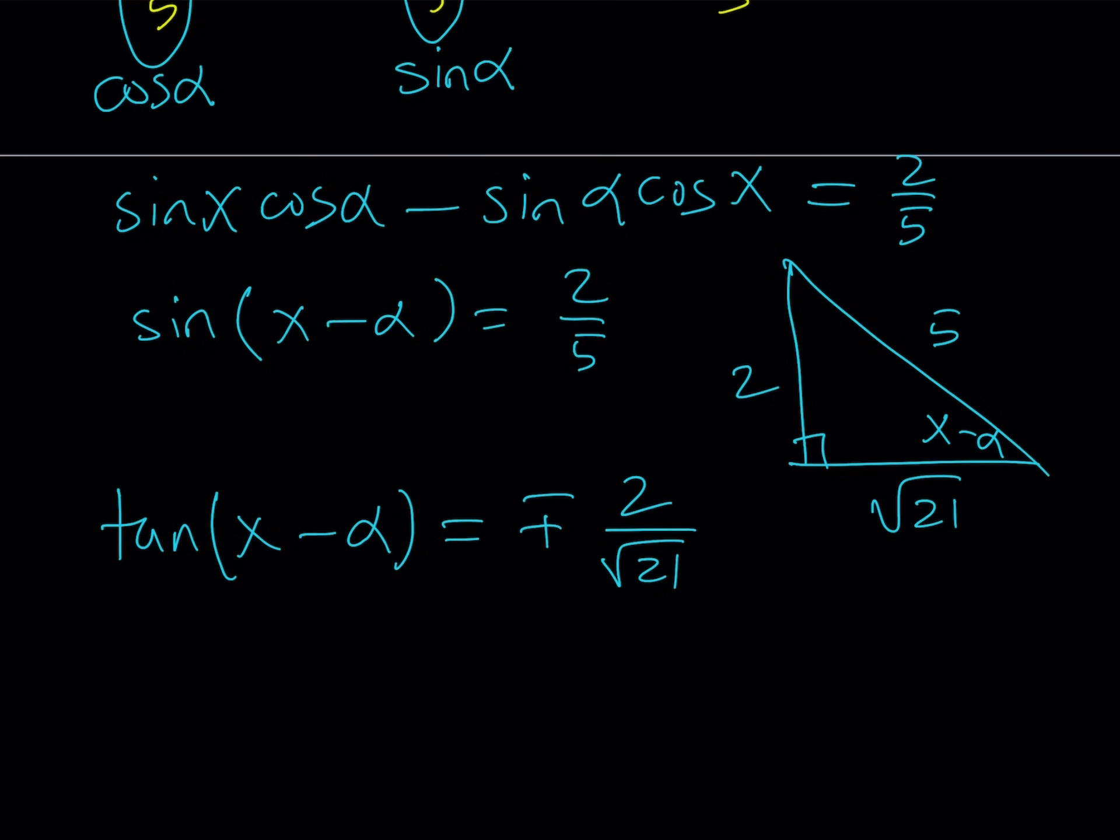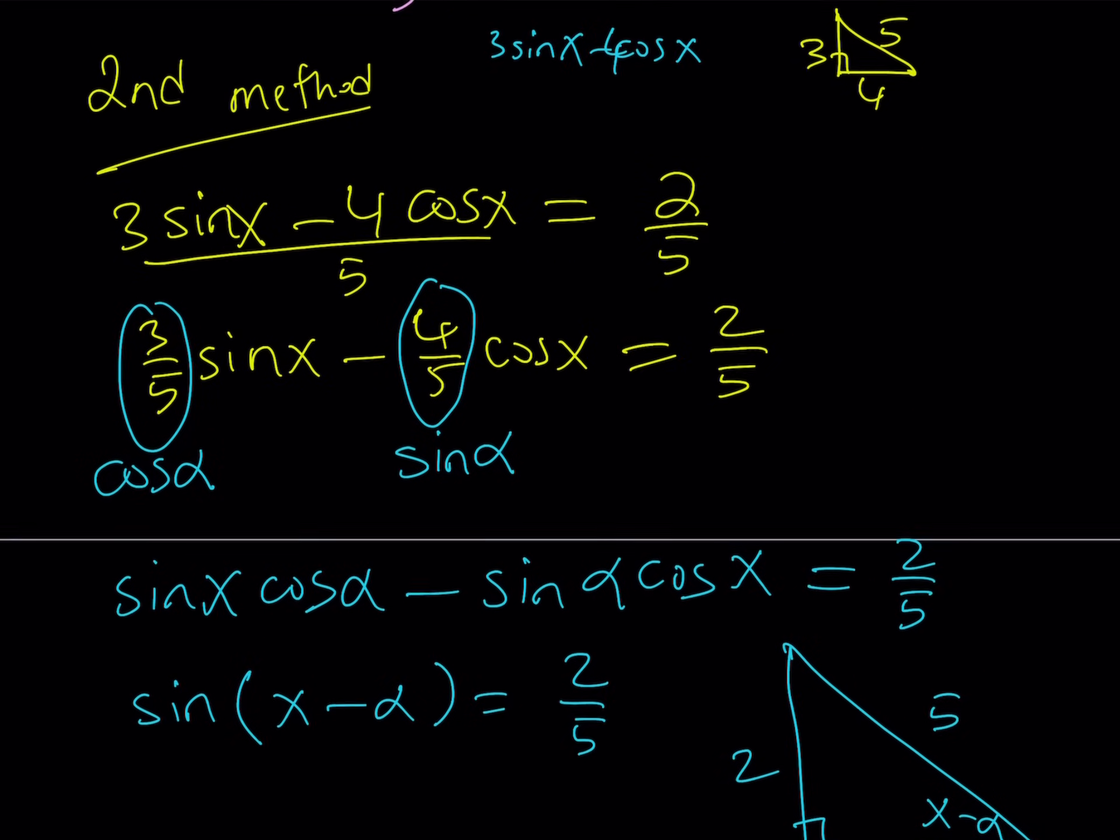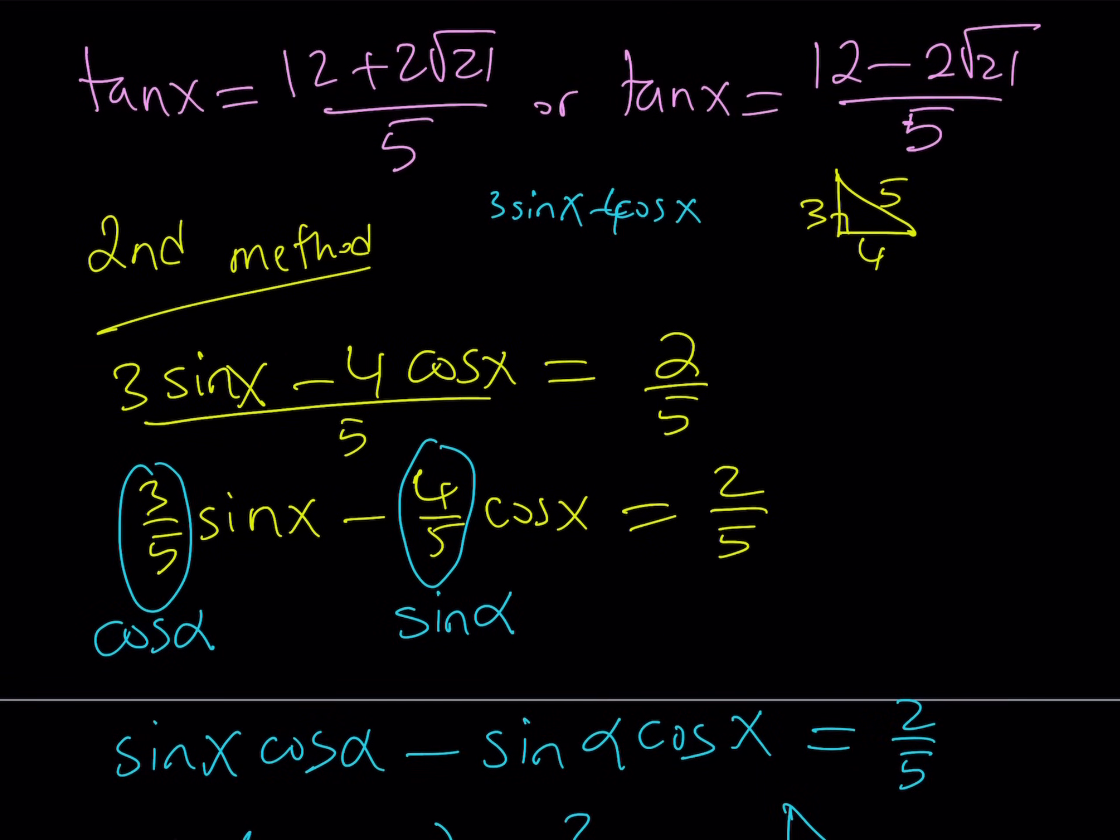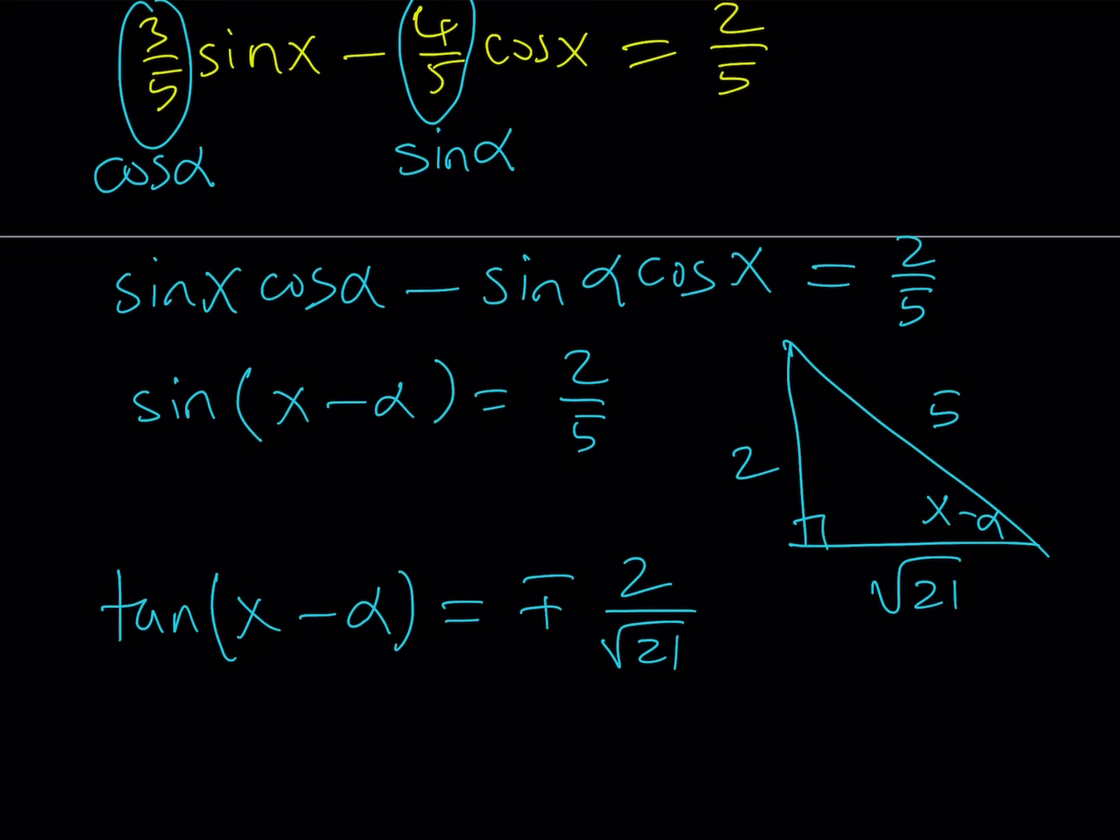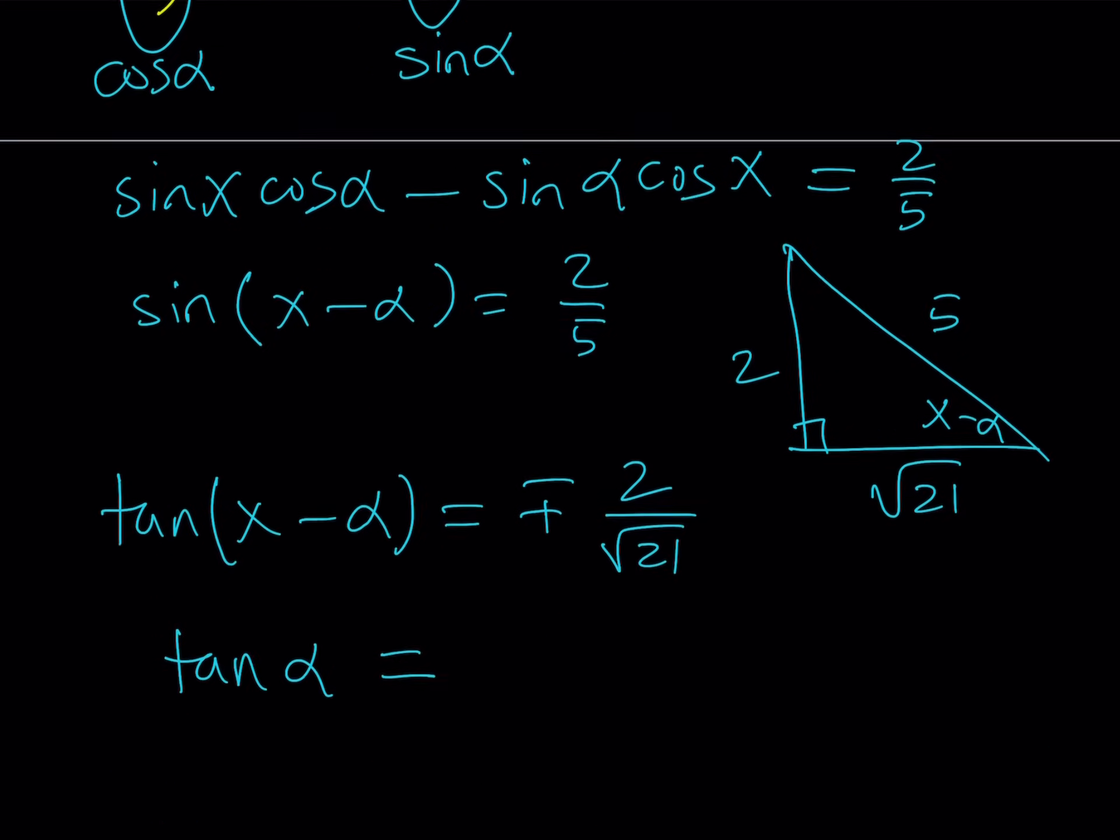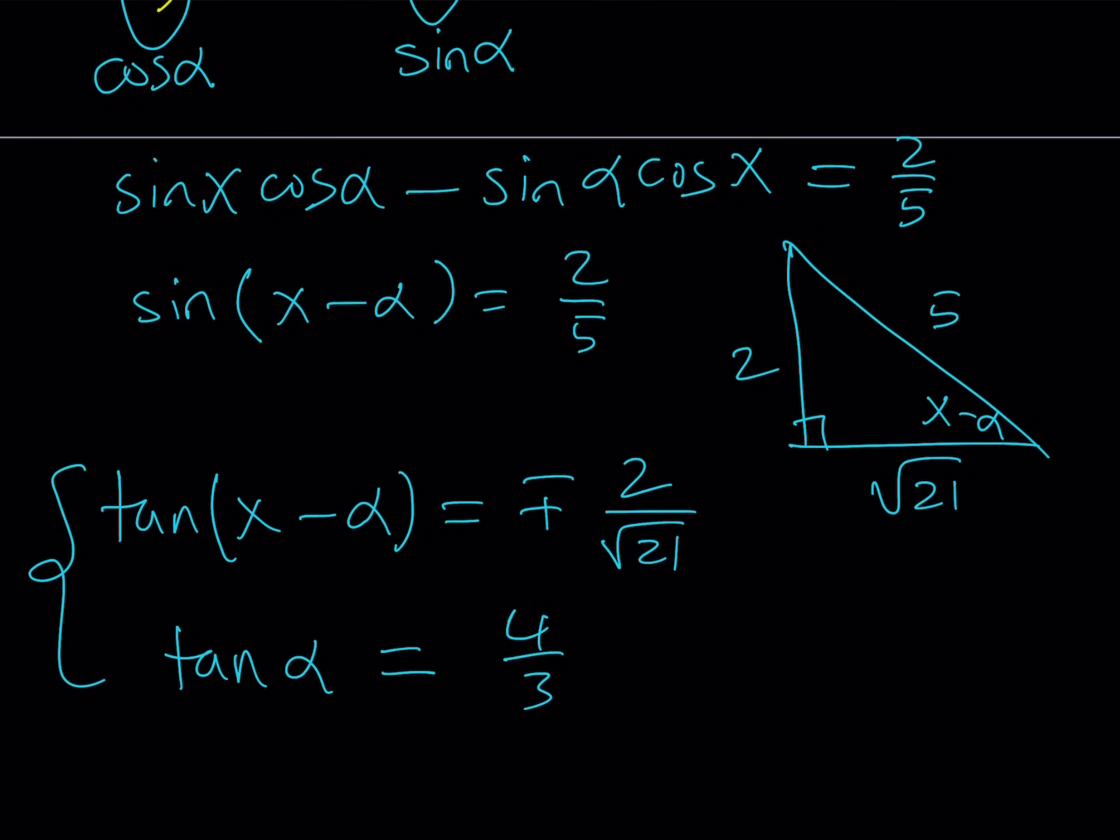But anyways, from here, tangent x minus alpha can be plus minus 2 over root 21. And we're going to be using both of the values. But guess what? We also have a tangent alpha value. If you look at the original problem, we did get a value. But here's the thing. We divided both sides by 5, right? We got this equation. But that also gave us something else. We can get the tangent alpha from here. How? Well, we do know sine alpha and cosine alpha. And finding tangent alpha would actually be a piece of cake. It's sine alpha over cosine alpha, which would be 4 over 3 in this case.